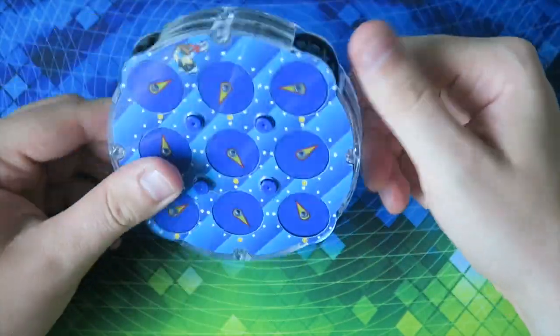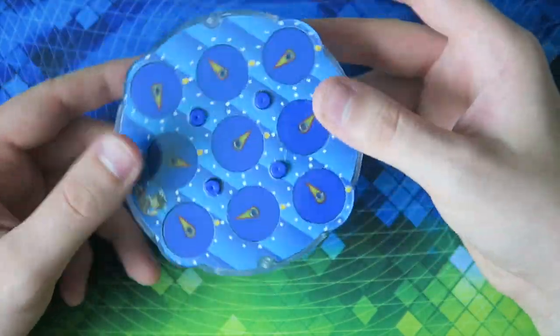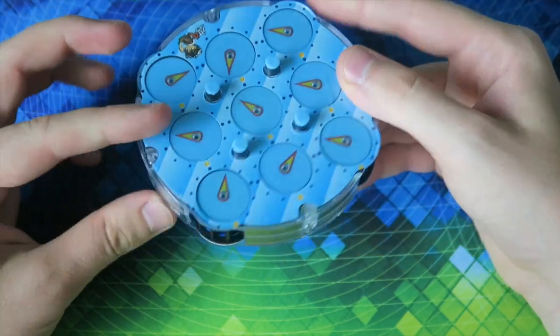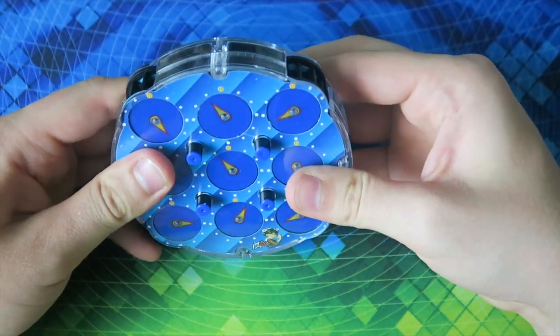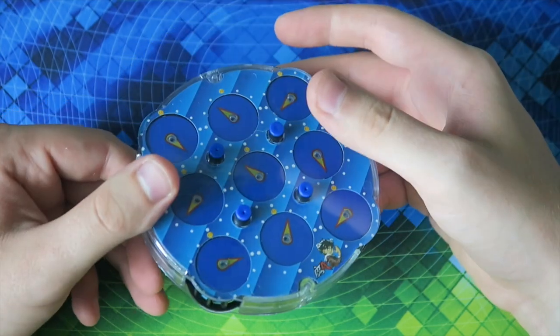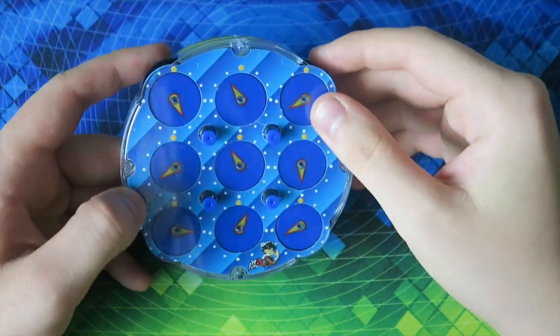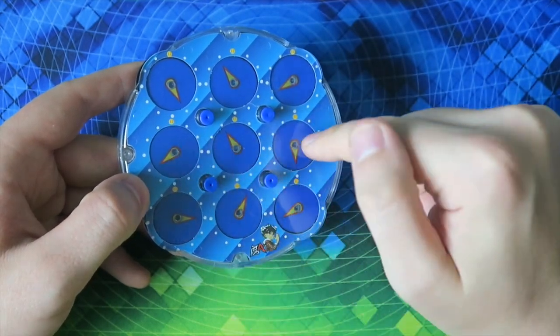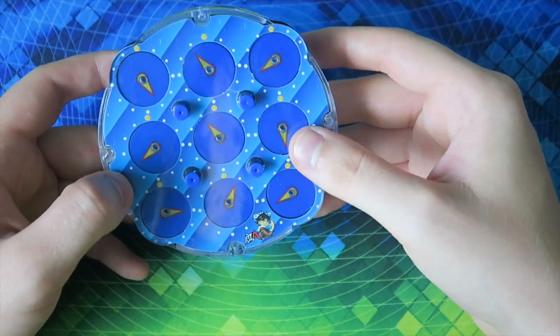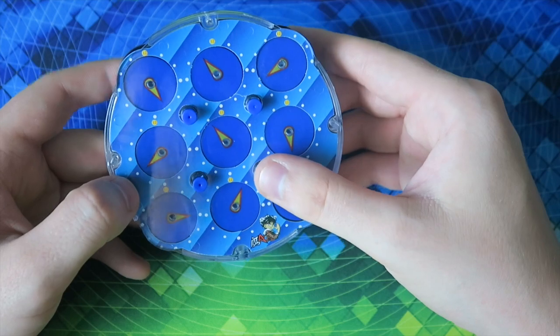Okay, so I reckon that is reasonably scrambled. I don't know what makes a good scramble, I was just kind of doing random moves. So let's just get started. I believe the first thing that you need to do is get this plus sign all facing in the same direction.